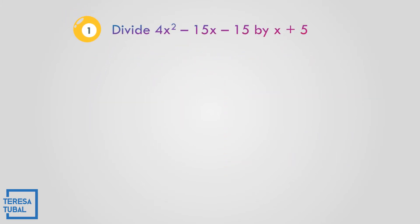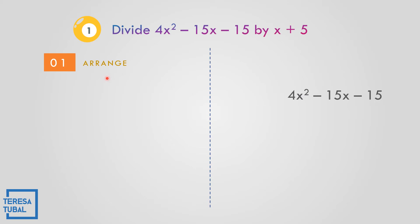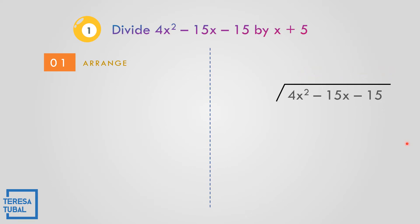Question number one: divide 4x squared minus 15x minus 15 by x plus 5. The first step is to arrange from highest to lowest exponent. As you can see, this is arranged: the exponent of the first term is 2, the next is 1, and the exponent of negative 15 is 0, because negative 15 times x to the 0 equals negative 15. So we divide 4x squared minus 15x minus 15 by x plus 5.